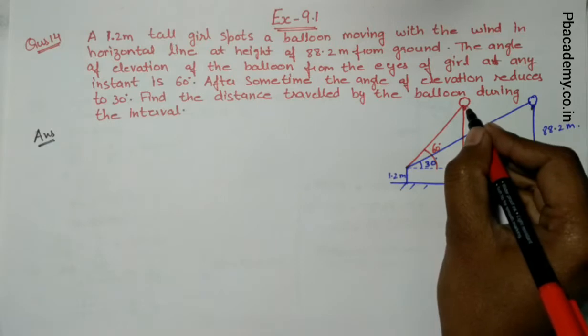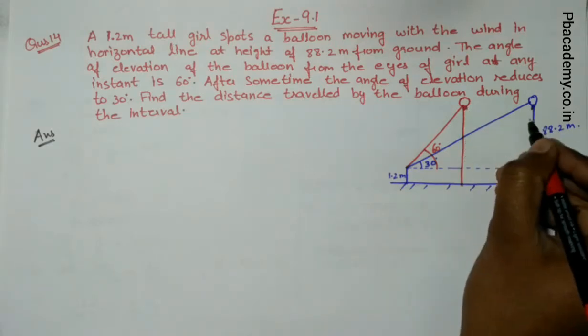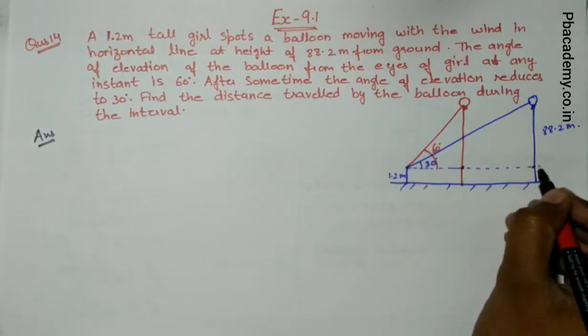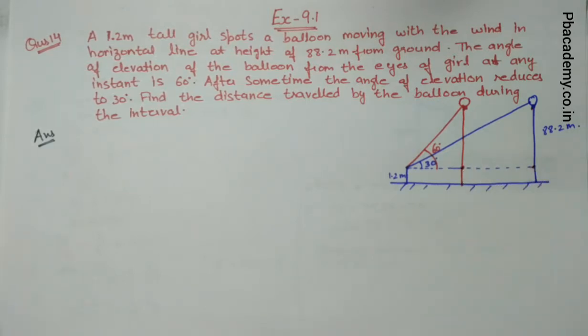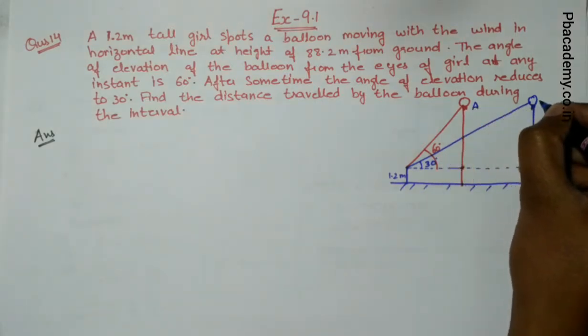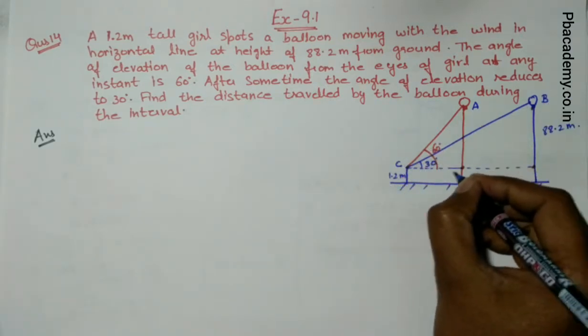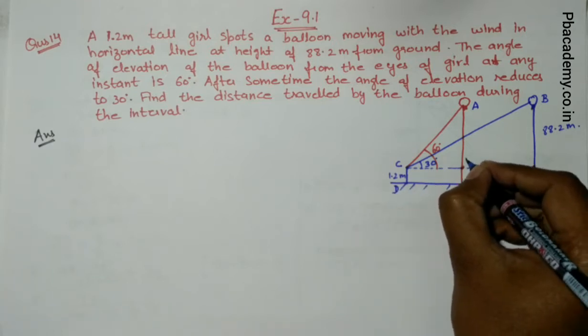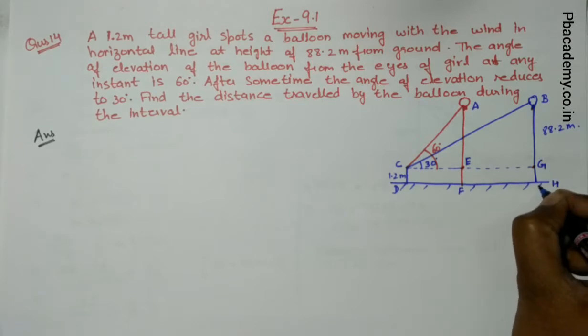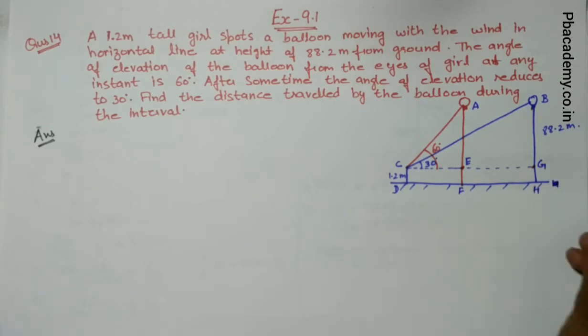The question is: from the initial position when the balloon is at 60 degrees, how much distance is the balloon flying? Let us first give some names. This point is A, this is B, this is C, this is D, this is E, F, G, and this point is H.